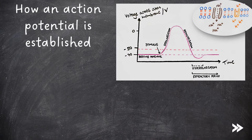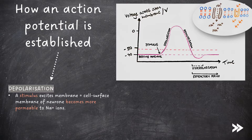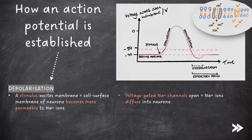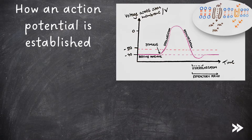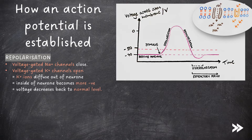So how is an action potential established? First of all we have depolarisation. A stimulus excites the membrane resulting in the cell surface membrane of the neuron becoming more permeable to sodium ions. Voltage-gated sodium ion channels open, allowing sodium ions to diffuse into the neuron. Voltage-gated potassium ion channels remain closed. Overall, the inside of the neuron is less negative. The next stage is repolarisation. Voltage-gated sodium ion channels close. Voltage-gated potassium ion channels open, allowing potassium ions to diffuse out of the neuron, making the inside of the neuron more negative. The voltage decreases back to the normal level.